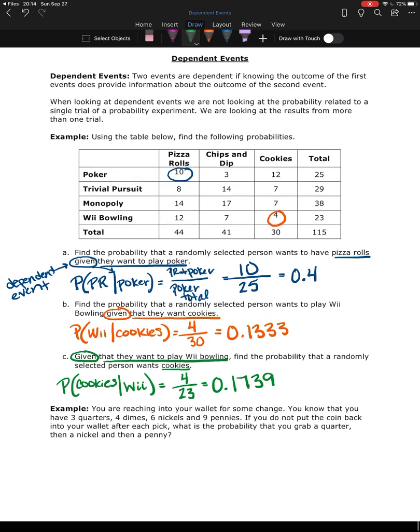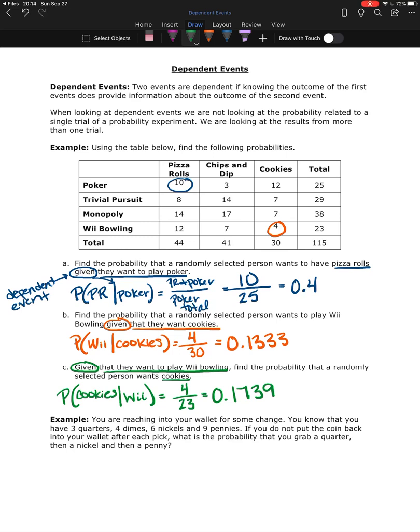So another example, a little bit different now. You are reaching into your wallet for some change. You know that you have three quarters, four dimes, six nickels, and nine pennies. If you do not put the coin back into your wallet after each pick, what is the probability that you grab a quarter, then a nickel, and then a penny? So we're looking at grabbing a quarter first, followed by a nickel, and then finally a penny. So I want to know the probability that I get a quarter, and a nickel, and a penny in that order. And when I pull out the quarter, I don't put it back. And what's important about that is when I go to find the nickel, I now have a different number of coins in the purse or in the wallet.